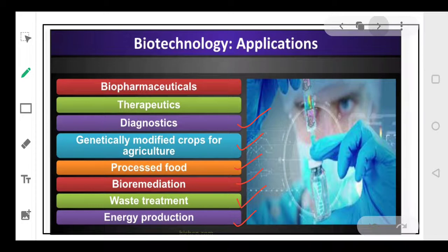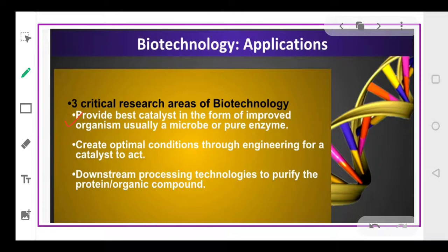There are three critical research areas in biotechnology. First, it provides the best catalyst in the form of an improved organism using a microbe or a pure enzyme — the improved gene inserted into the organism makes that organism better in comparison to the older one. Secondly, it helps to create optimum conditions through which the engineering for a catalyst to act upon a particular substrate can be increased. And third, it deals with downstream processing technologies to purify a protein before it is sent to the market.